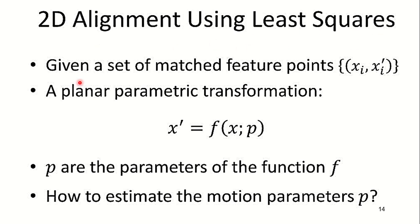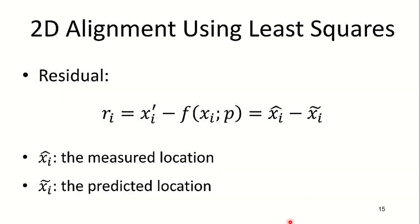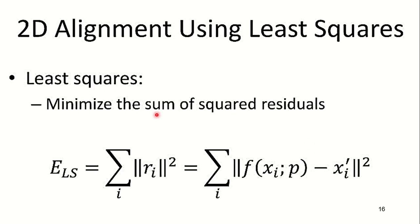2D alignment using least squares. Given a set of matched feature points (xi, xi'), and planar parametric transformation x' = f(x, p), where p are the parameters of the function f, how do we estimate these motion parameters p? We square the residuals, that is the difference between these two points: the measured location and predicted location. Here xi hat is the measured location and xi tilde is the predicted location. We minimize the sum of the squared residuals: E_LS = Σ|ri|².